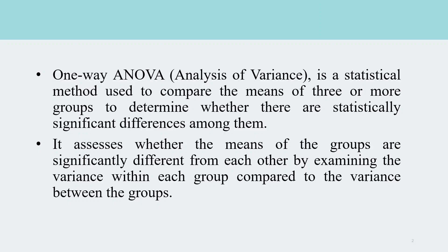One-way ANOVA, also known as analysis of variance, is a statistical method used to compare the means of three or more groups to determine whether there are statistically significant differences among them.